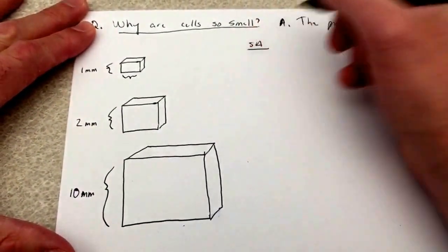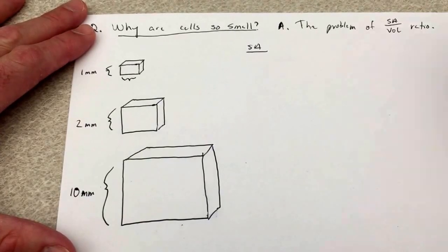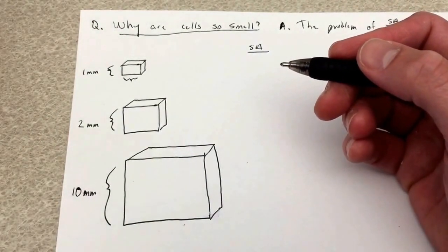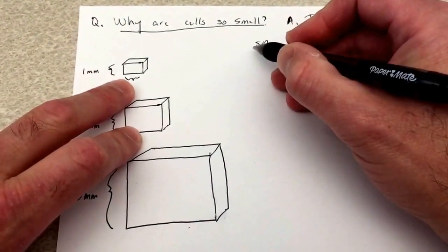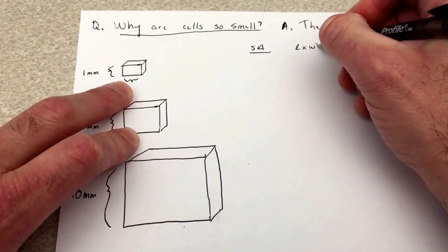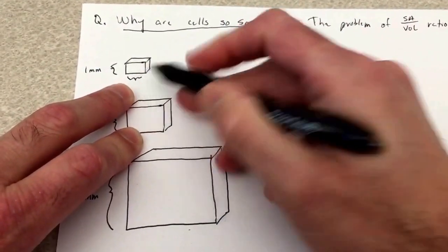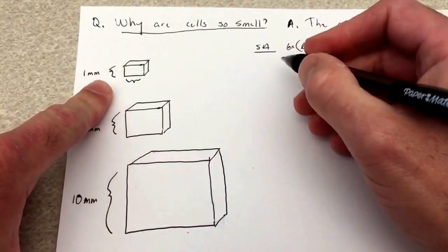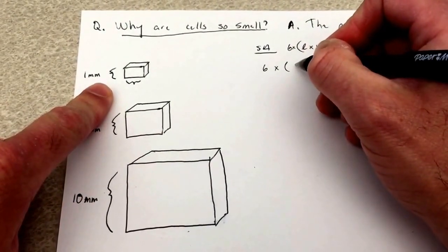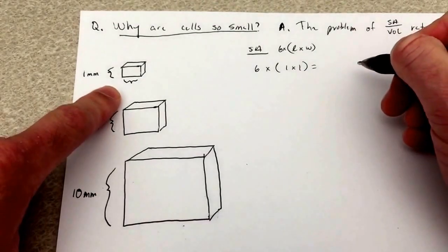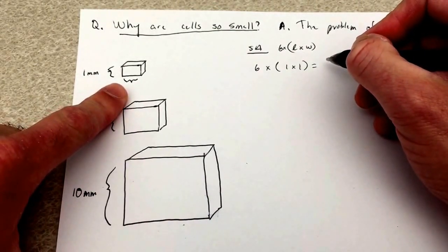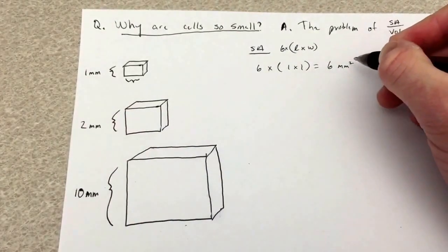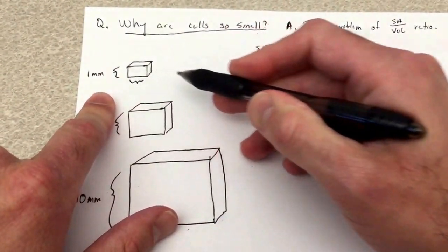So how do you determine the surface area of a cube? It's given by a pretty simple mathematical equation, which you've probably learned in geometry or high school algebra. The surface area of a cube is length times width for just one face. But how many faces does a cube have? Six. So it's six times length times width. For the one millimeter cube, that's six times one times one, which gives us six millimeters squared.